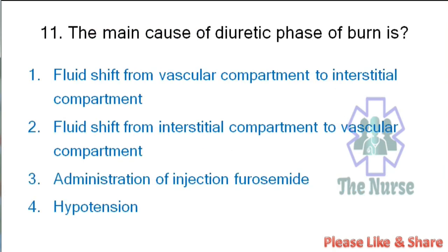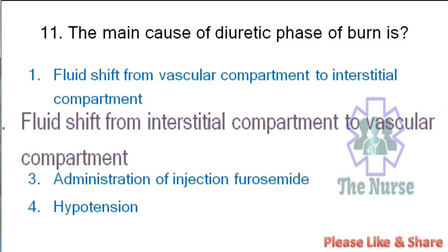Next question: The main cause of the diuretic phase of burns is — fluid shift from vascular compartment to interstitial compartment; fluid shift from interstitial compartment to vascular compartment; administration of furosemide; hypotension. Correct answer: fluid shift from interstitial compartment to vascular compartment — that is opposite to the hypovolemic phase.